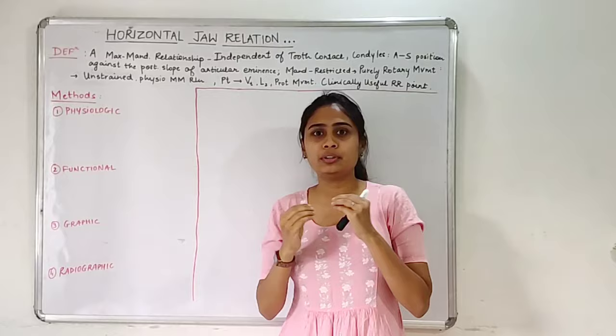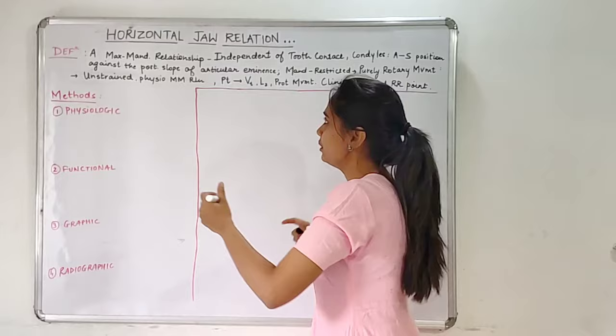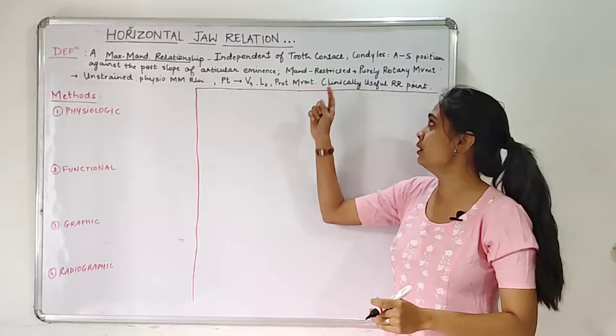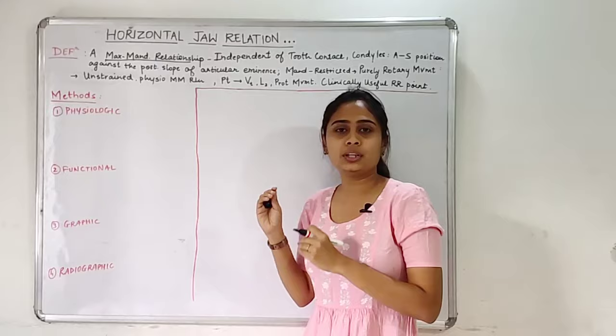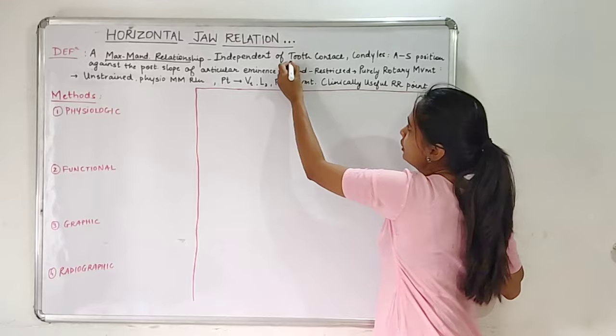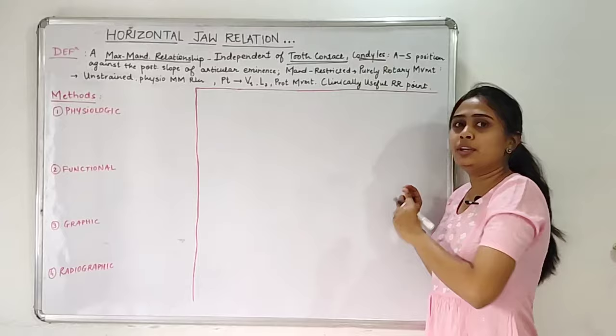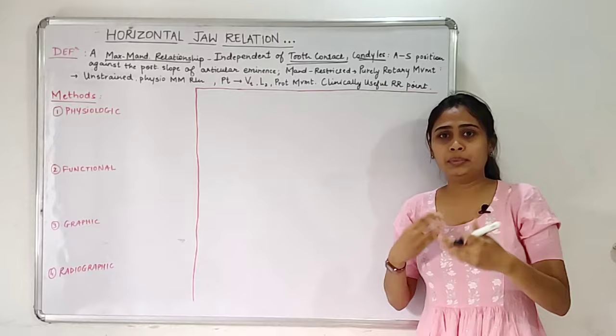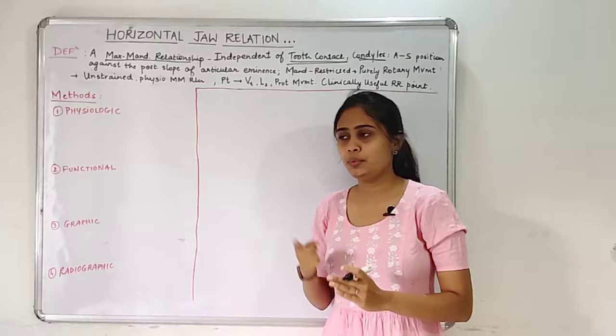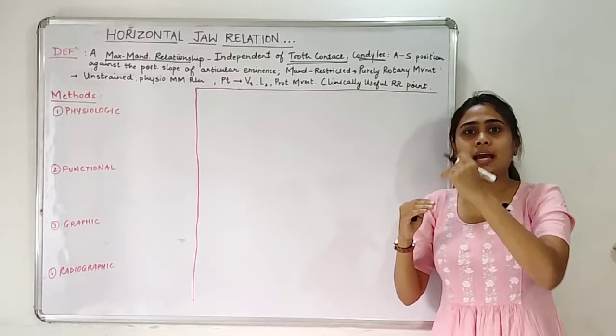Since we are in a subject dealing with maxilla and mandible, the first key point is that it is a maxillomandibular relationship. Secondly, we have to remember tooth contact — it is a maxillomandibular relationship which is independent of tooth contact. After focusing on maxilla, mandible, and tooth contact, the next part involves the condyle. So: it is a maxillomandibular relationship, independent of tooth contact, in which the condyles articulate in the anterior superior position against the posterior slope of the articular eminence.